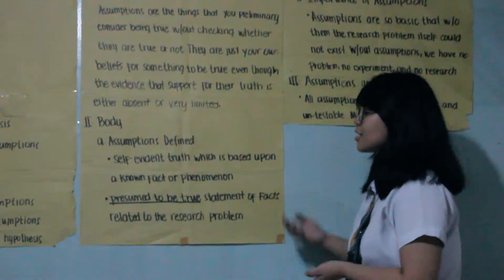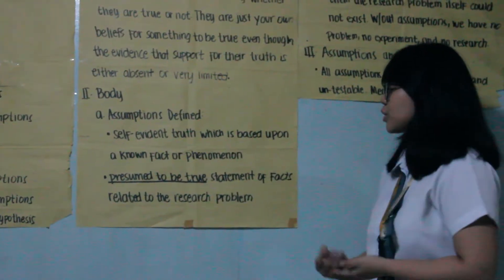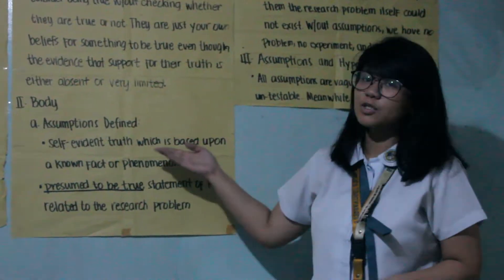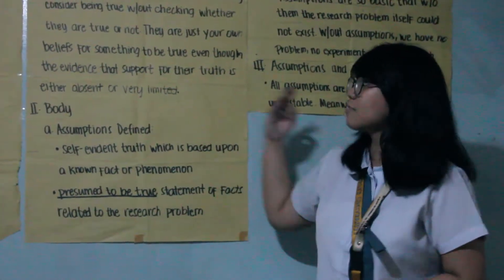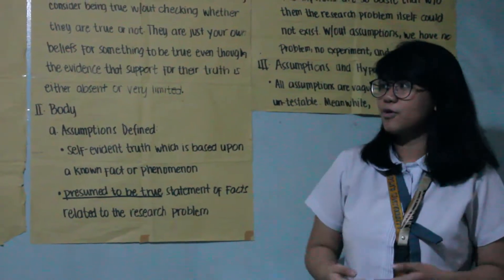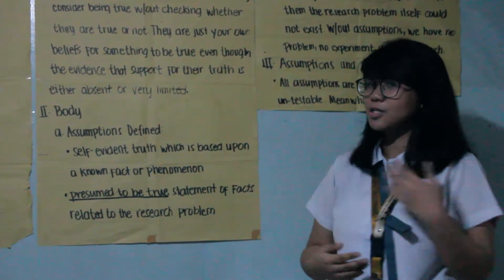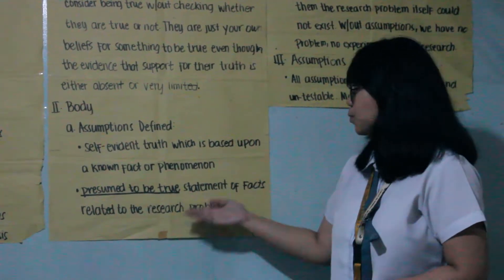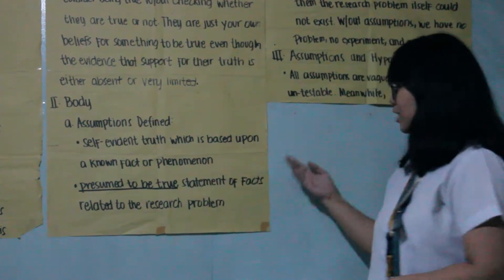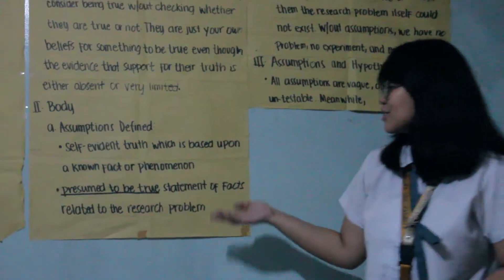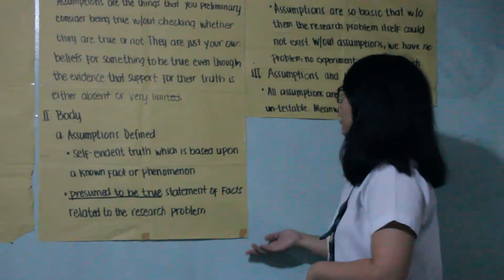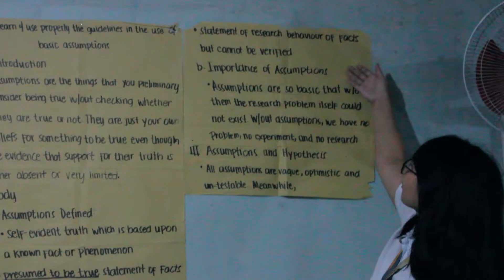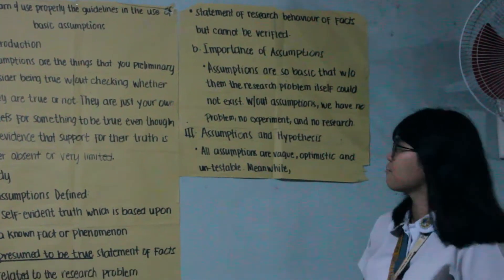We can define assumption as a self-evident truth which is based upon a known fact or a phenomenon — it is something that you only believe. The next definition is the presumed to be true statements of facts related to the research problem. And the final definition is a statement of research behavior of facts that cannot be verified.